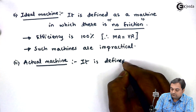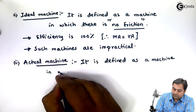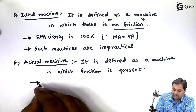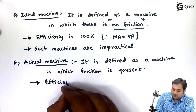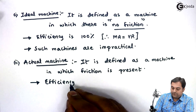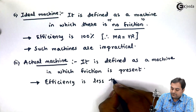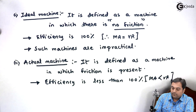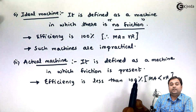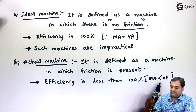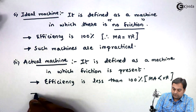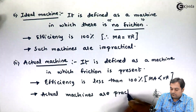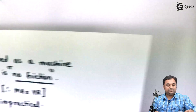Actual machine is defined as a machine in which friction is present. The efficiency of actual machines is not 100%, so efficiency is less than 100%. This means mechanical advantage will be less than velocity ratio, because efficiency equals MA upon VR. So if MA is less than VR, efficiency becomes less than 100%. Actual machines are practical machines.